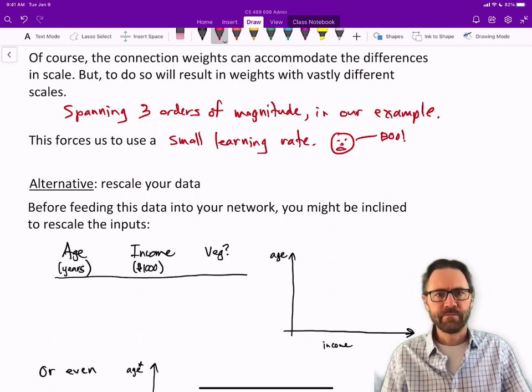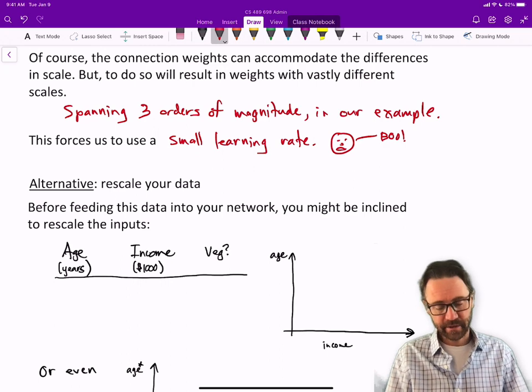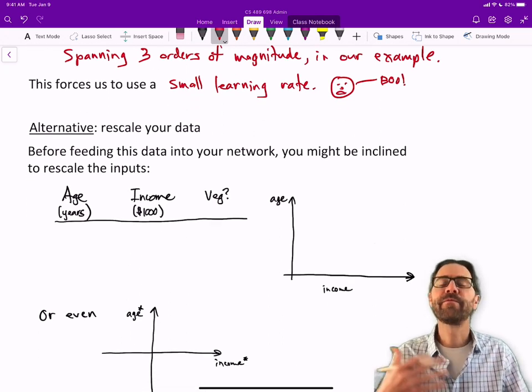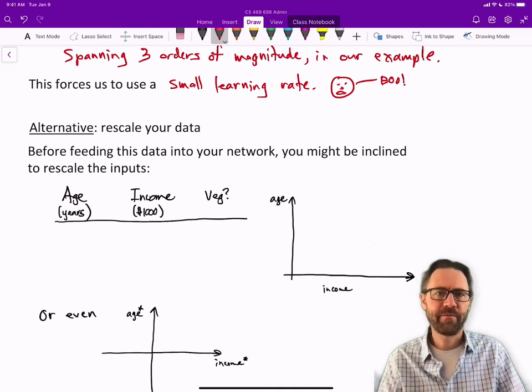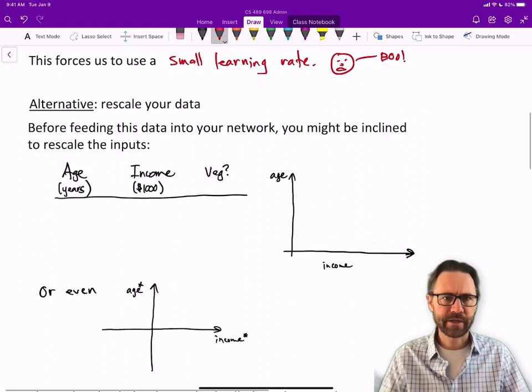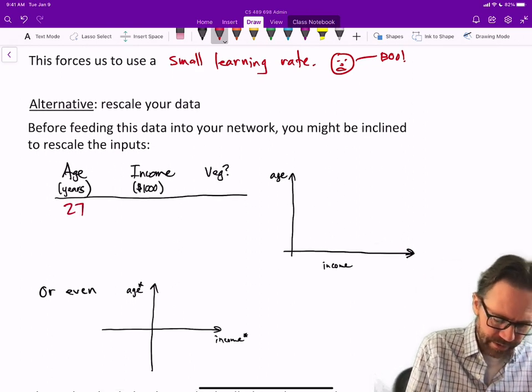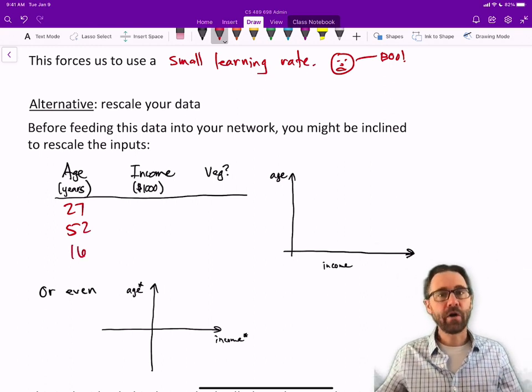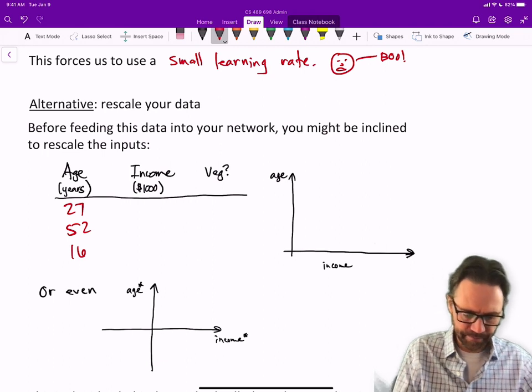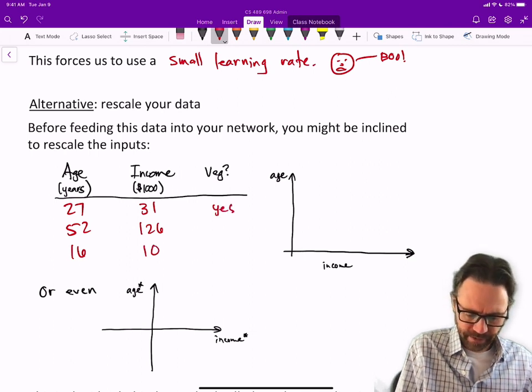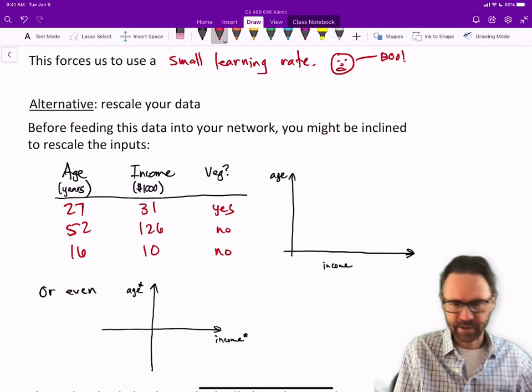An alternative to this dataset—I could imagine many of you would try this before feeding into your neural network—you might be inclined to rescale it. So you might keep age in years (27, 52, 16) but now represent income not as dollars but as thousands of dollars (31, 126, 10).